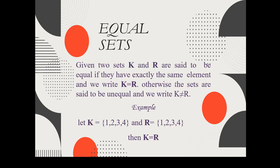Equal sets: as the name indicates, equal means everything should be the same. In two sets, everything should be the same. Given two sets K and R, they are said to be equal if they have exactly the same elements, and we write K = R. Otherwise the sets are unequal and we write K ≠ R.